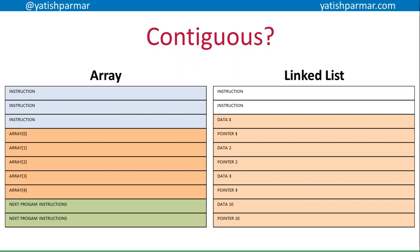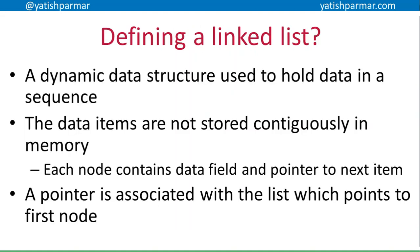So you can see that although data one, data two, data three might be near each other, the next thing that comes could be data ten, because I might have deleted that item and added another item somewhere else. So all those data items in the sequence are not stored next to each other in memory. Each node therefore contains the data field and a pointer to the next item.